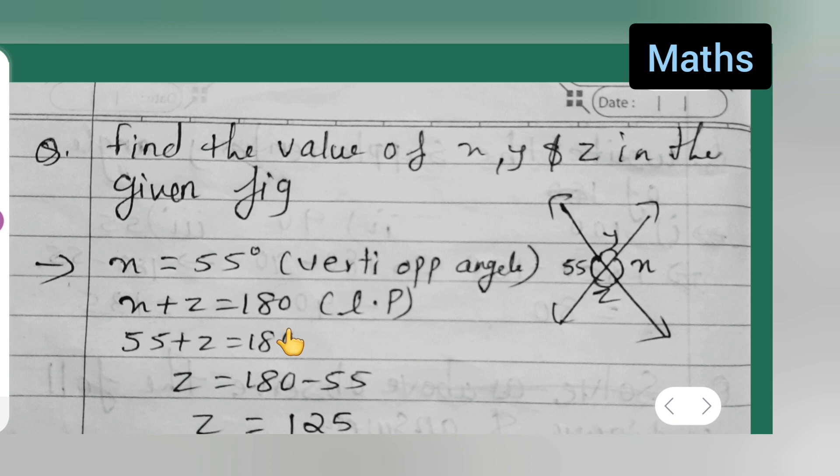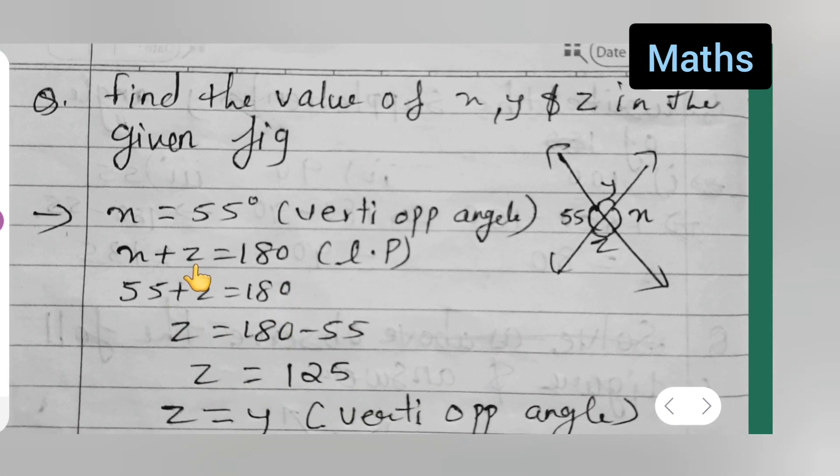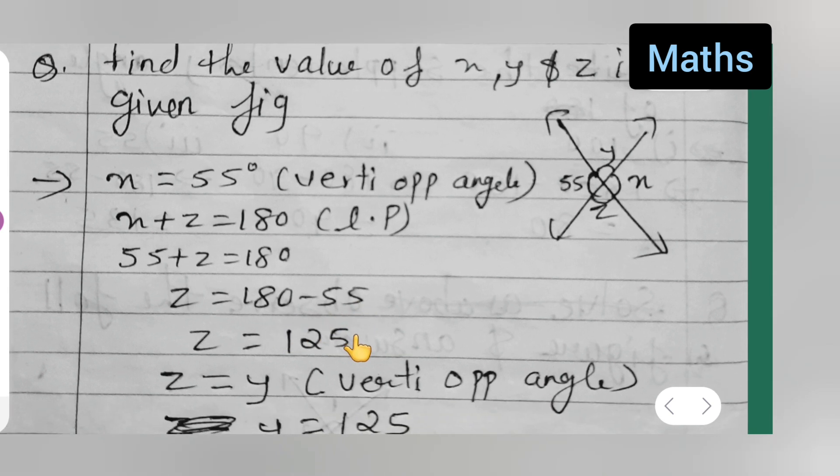So what is the value of x now? We got 55. 55 plus z is equal to 180. z is equal to 180 minus this 55 will go other side. So when you take it to the other side it will become negative because here it is positive, right? So minus 55. z is equal to 180 minus 55 will be 125.